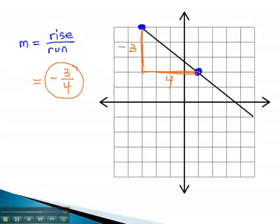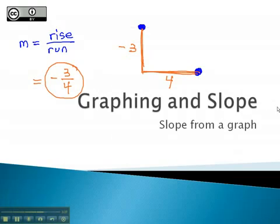By counting the rise and the run, we can find how steep, or what is the slope, or rate of change, of our line.